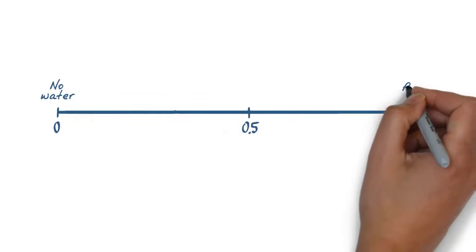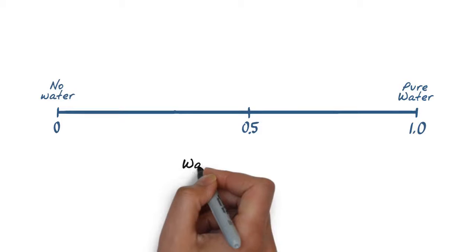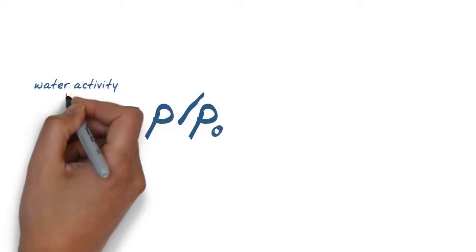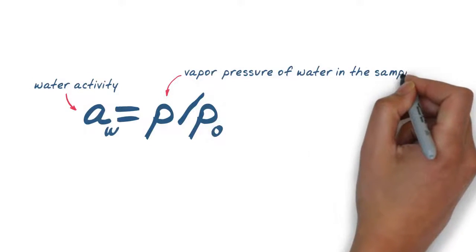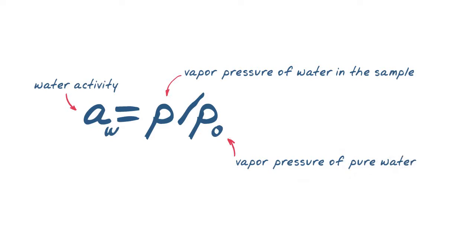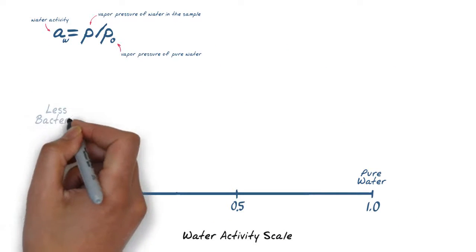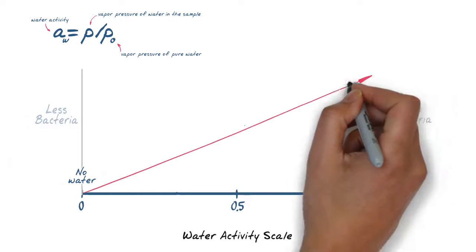Water activity is based on a scale of 0 to 1.0, with pure water having a value of 1.00. It is defined as the vapor pressure of water over a sample divided by the vapor pressure of pure water at the same temperature. In other words, the more unbound water we have, the more likelihood we have of microbial spoilage.